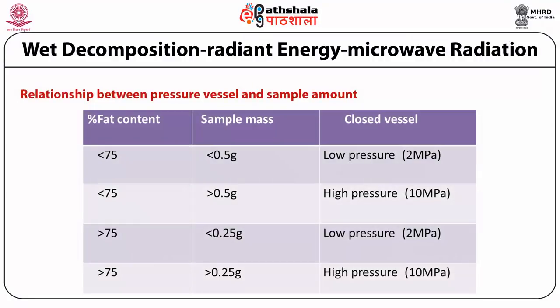Regarding the relationship between pressure vessel and sample amount: if the fat content percentage is more than 75%, more than 0.5 grams of sample is required at a pressure of 2 MPa. With an increase in sample mass, higher pressure can be employed, and if the sample amount available is low, lower pressure can be applied as well.